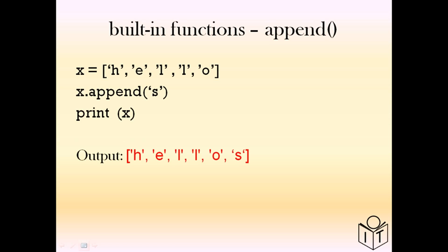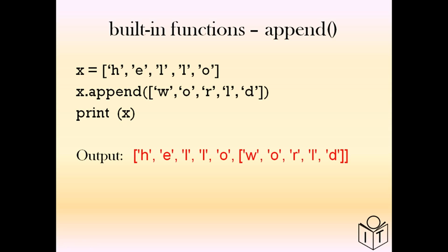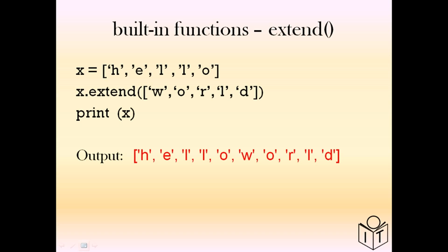We can add items to the list using 'append'. Here we append the letter 's' and it goes at the end of the list. If we append another list, we end up with that list inside our list — not the values but the whole list, so be very careful. Notice the output has square brackets inside, meaning we have a list within a list. If you don't want that, you can use the 'extend' built-in function.